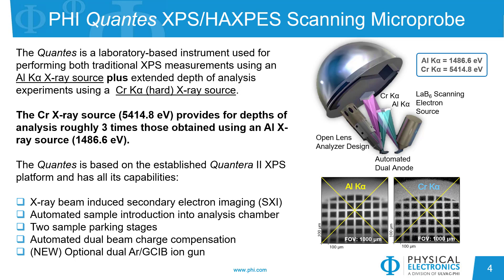At 5.4 keV, chromium X-rays provide a depth of analysis roughly three times that of aluminum X-rays. The QUANTES has all the features of the QUANTERA 2, such as automated sample transfer, a scanning X-ray microprobe, and automated charge neutralization. In addition, an optional ion gun is available with monatomic and argon gas cluster capabilities for profiling polymers and organic materials.